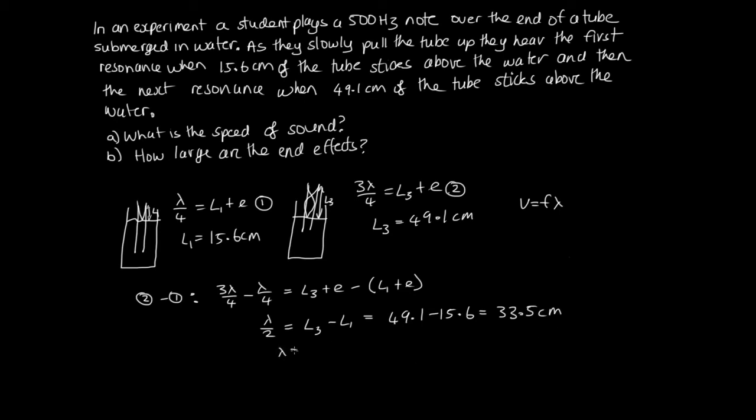So that tells us that the wavelength is double this, two times this, so 67 centimeters. And so V is equal to 500 times the wavelength which is 0.67 meters. So this is in meters and this is in per second. And so this gives us 335 meters per second, which is a reasonable speed of sound. That would be a coldish day.